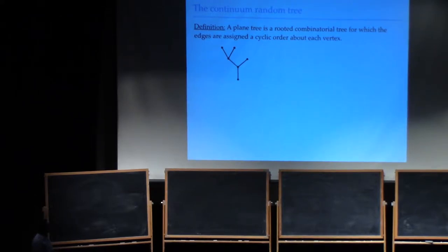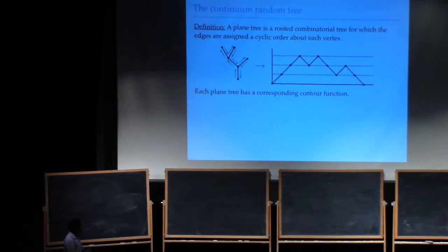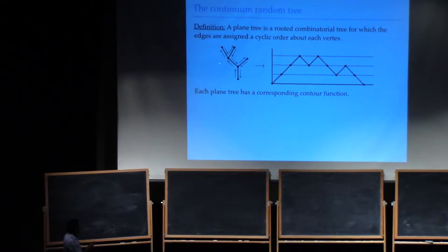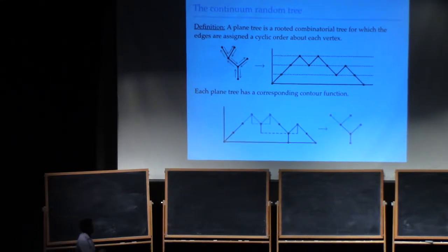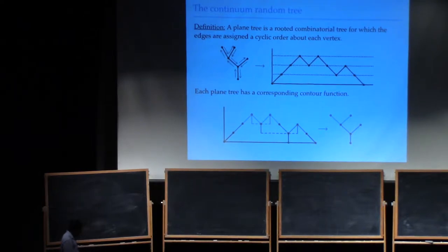What's a planar tree? It's a rooted combinatorial tree for which the edges are assigned a cyclic order about each vertex. The standard way of taking scaling limits of such trees is to look at their contour functions. You take the tree, build from the contour function an excursion, and you can go backwards. Trees of this nature are in bijective correspondence with such excursions.